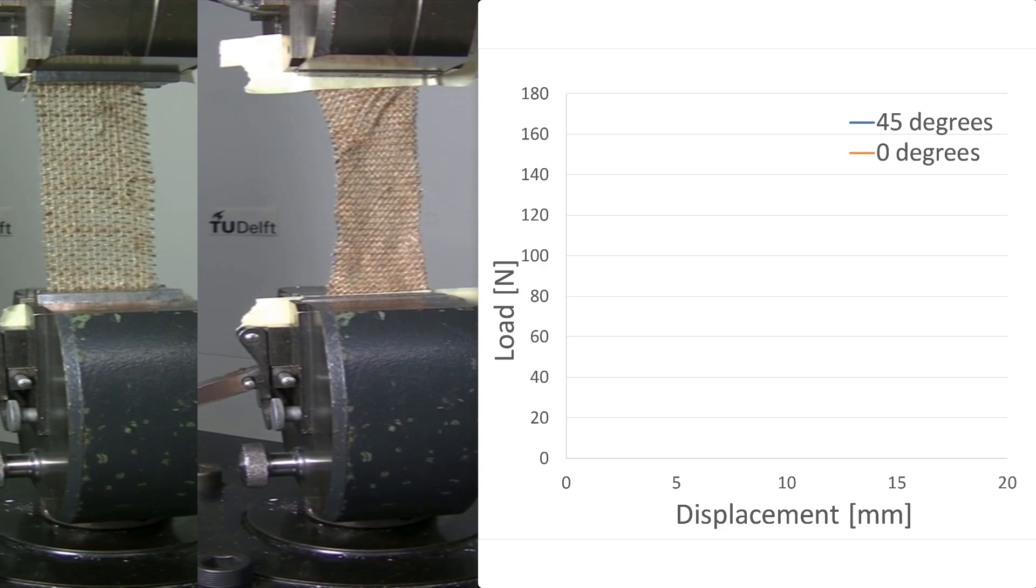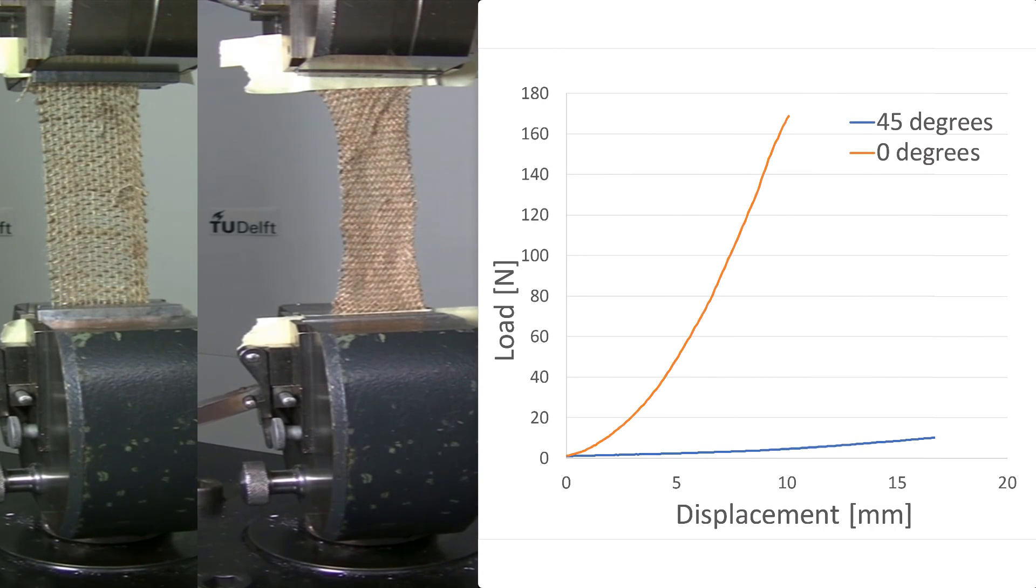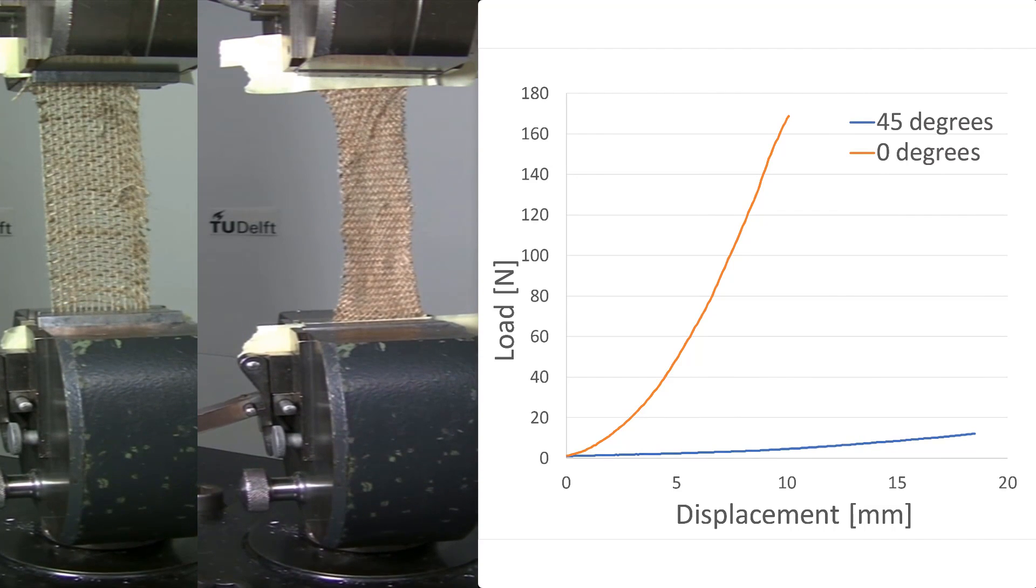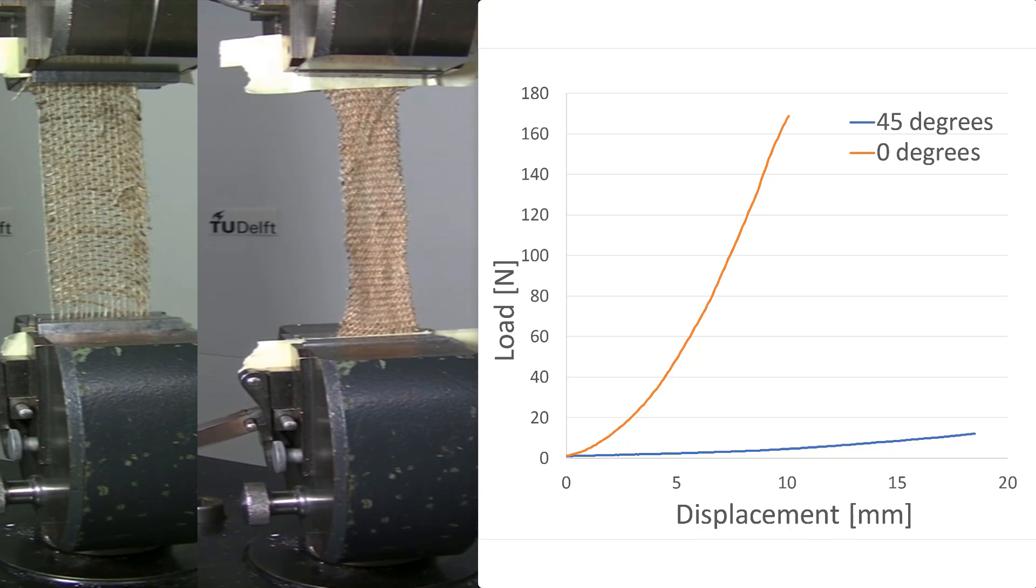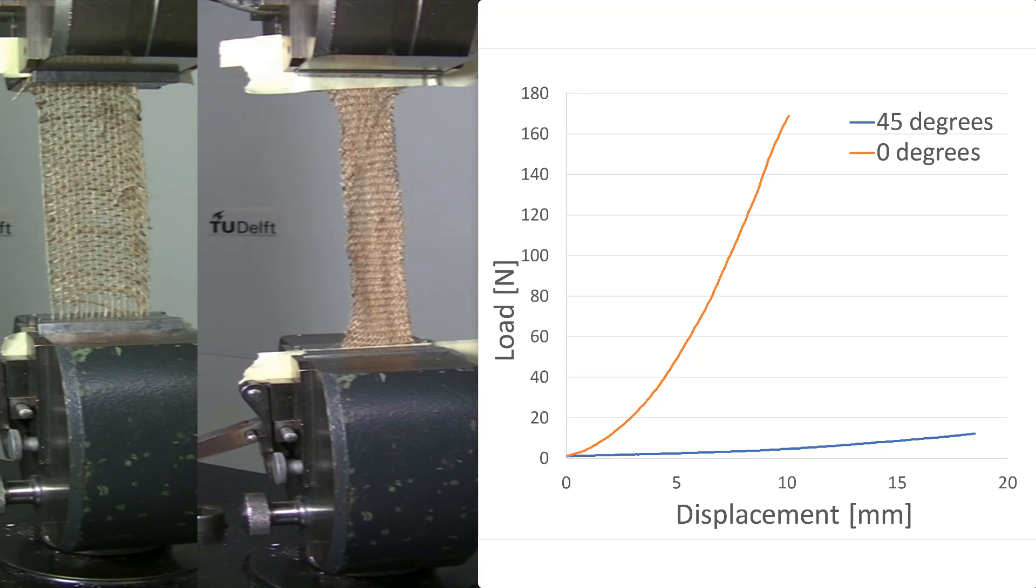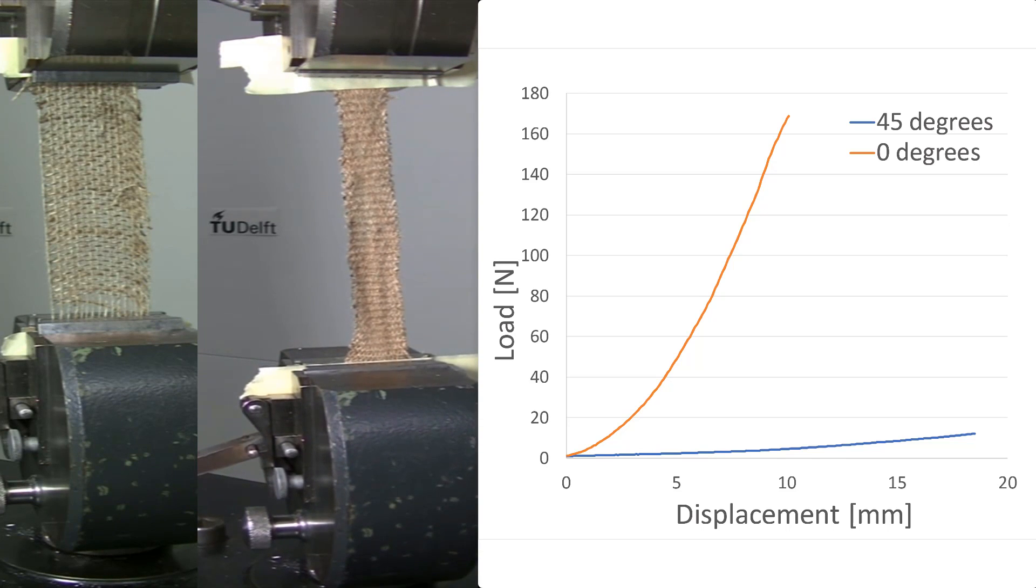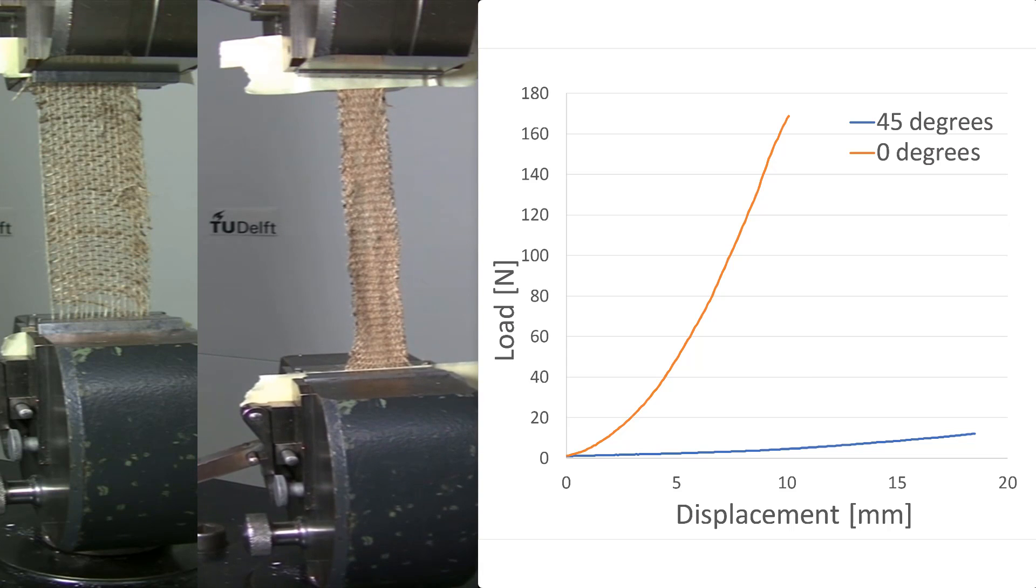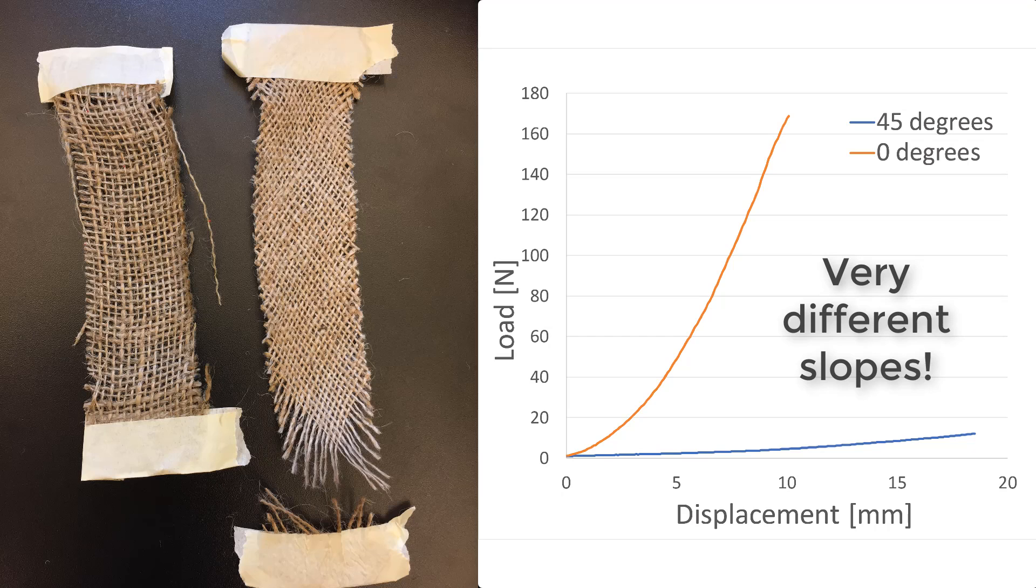Here you can see the footage of the burlap material side by side. As with the last test, we can also see the force displacement curves that go along with the tests. And it seems something is very different here. We can see that the deformation behavior of the 45-degree specimen is very different than the 0-degree specimen. We can see this both by the footage and by the slope of the force deflection curves. The material appears to be much more stiff in the 0-degree direction than in the 45-degree direction. The material properties are clearly different in different directions.